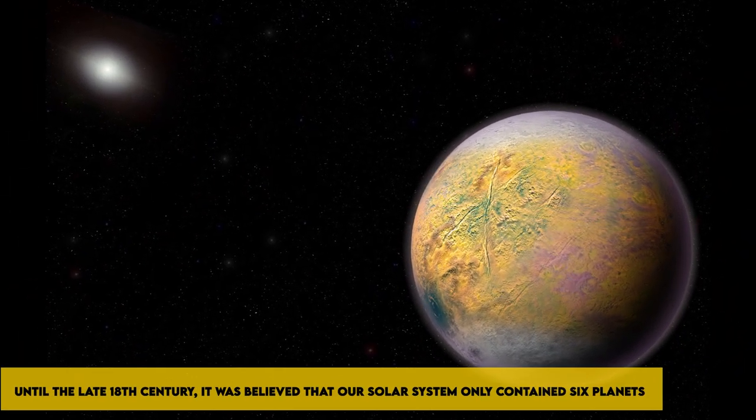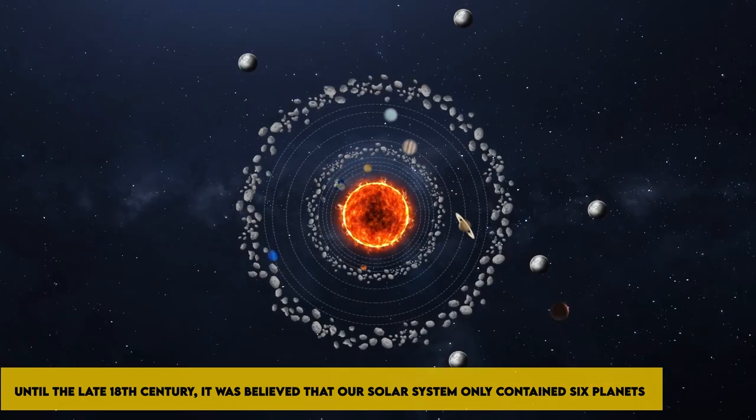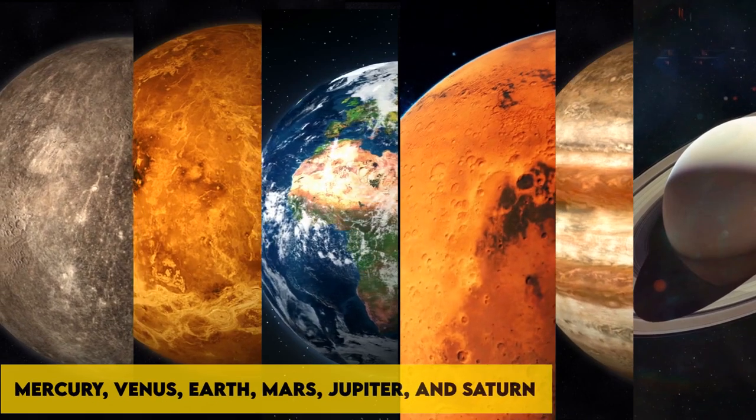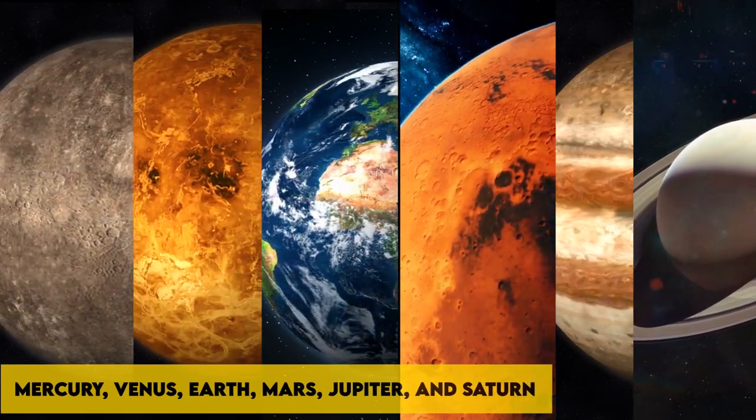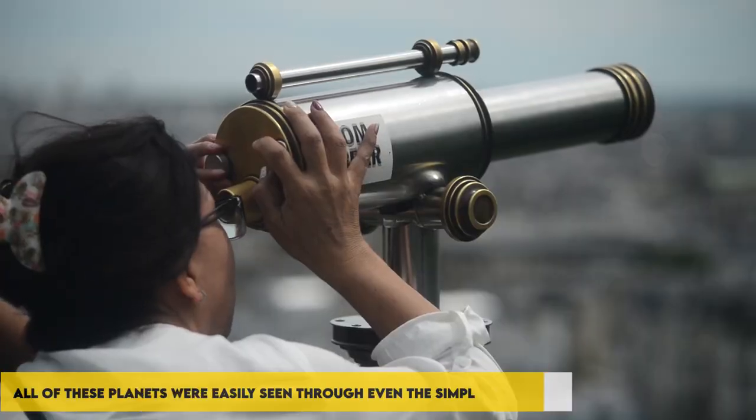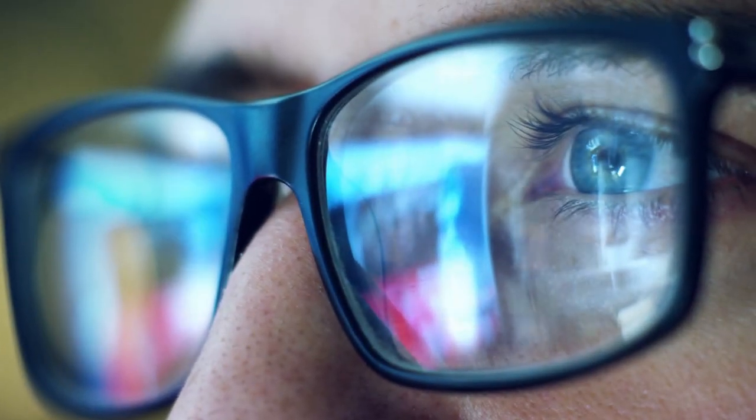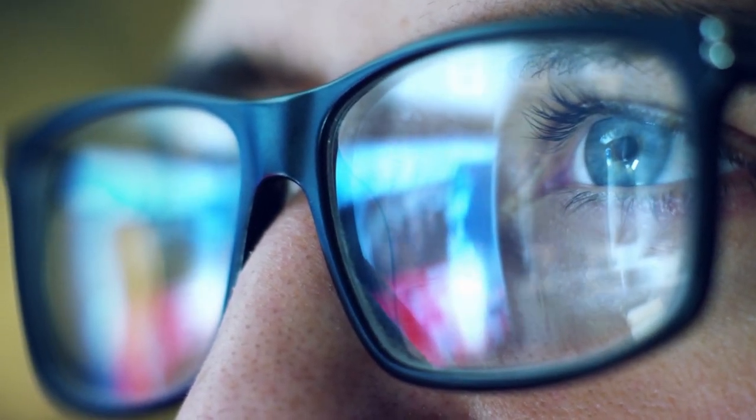Until the late 18th century, it was believed that our solar system only contained six planets: Mercury, Venus, Earth, Mars, Jupiter, and Saturn. All of these planets were easily seen through even the simplest telescopes, or in good seeing conditions, even with the unaided eye.